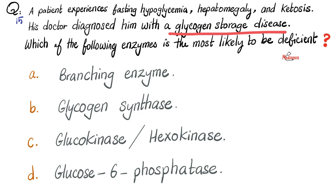This patient has a glycogen storage disease. Is it a problem in making glycogen, i.e. building up glycogen, or is it a problem in breaking down glycogen to glucose? When this patient fasts, he suffers from low blood sugar, which means it's a problem in breaking down glycogen. When you cannot perform glycogenolysis, you will suffer from fasting hypoglycemia. All the glycogen that failed to break down will accumulate in the liver, causing hepatomegaly. And when you cannot utilize carbohydrates for energy, you shift to fat breakdown, producing ketone bodies — ketosis.